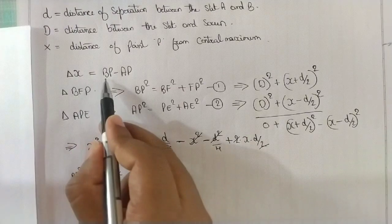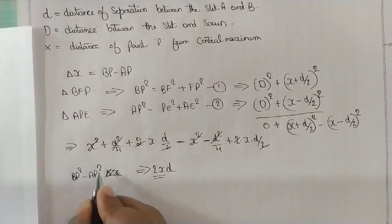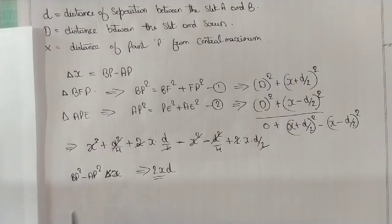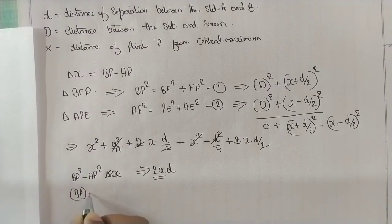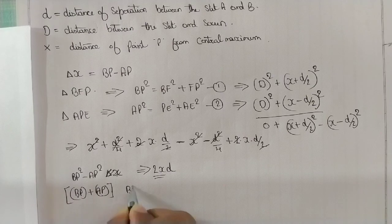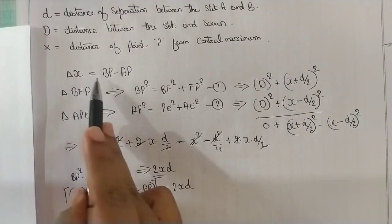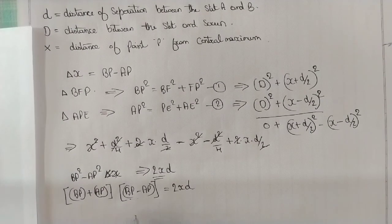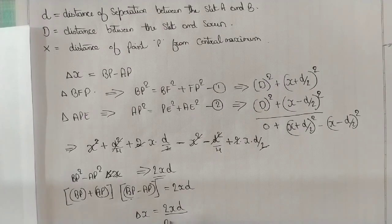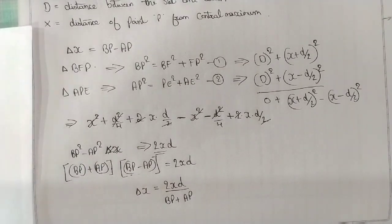So BP² − AP² = 2XD. Since BP² − AP² can be written as (BP + AP)(BP − AP), and our delta X is BP − AP, we can write: delta X = 2XD divided by (BP + AP).